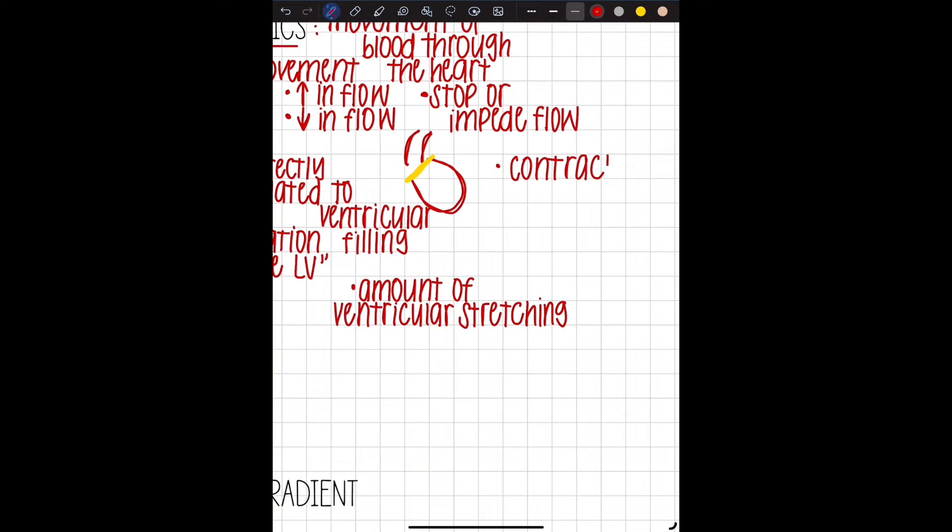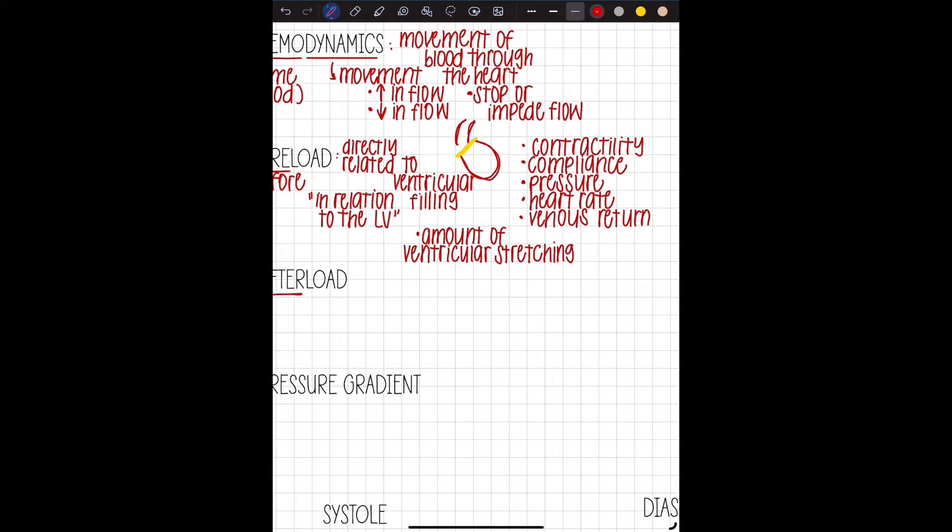Now preload is related to a few different things besides ventricular filling. Some things that can really affect that could be contractility, the ability really for the heart to contract, compliance. Remember in this case we're really talking about the ventricles, pressure, heart rate, and the amount of venous return because you need blood to move blood. So if you say they have an increase in preload or they're really depleted in preload, there's usually an underlying issue for that. And that's where you kind of look at these other scenarios and these other factors that might be related.